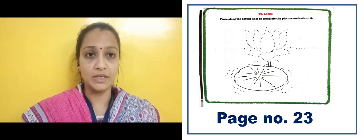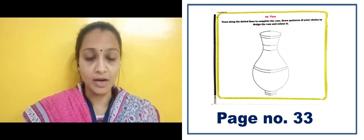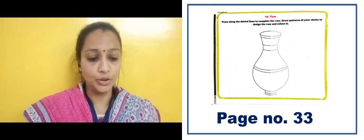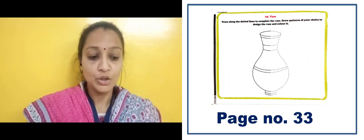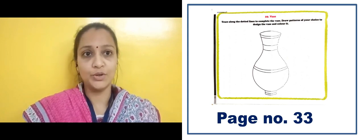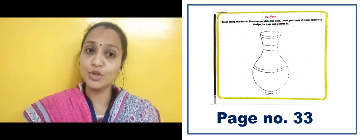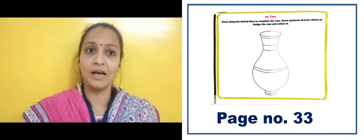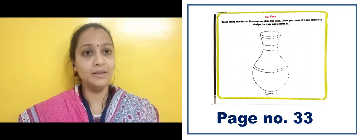Here there is an activity on your page number 33. Here there is an image of a vase. You have to trace along the dotted line to complete the vase, then draw a pattern of your choice to design the vase and color it. Complete the dotted line first, then draw your pattern inside the vase and color it.